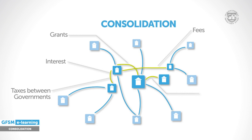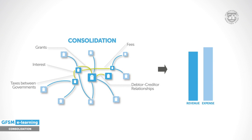Furthermore, debtor-creditor relationships exist within or between different levels of government, such as loans provided from central government units to local governments. Simply adding the revenue, expense, or loans of each government unit would produce an inflated fiscal picture. These internal transactions between government units are not relevant for an analysis of the government's fiscal position, as they do not reflect the interaction with the rest of the economy. In essence, we are interested in fiscal reports that have eliminated this internal double counting.